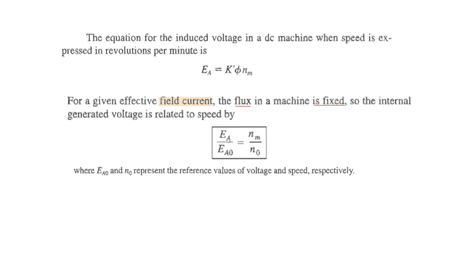Now if the field current is fixed, then the flux in the machine will also be fixed, and therefore this can be taken as a fixed quantity. That means Ea is proportional to Nm.